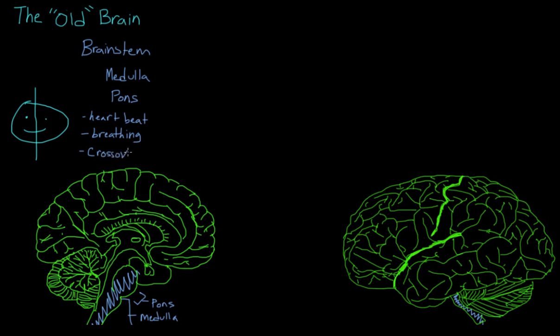But it also serves as a crossover point for our body's nerves. I need to reference the fact that the right side of the brain controls the left side of the body, and the left side of the brain controls the right side of the body. So in the brainstem, nerves that are coming in from the left side of our body cross over and move to the right side of our brain. And similarly,